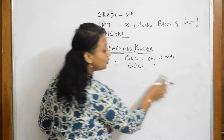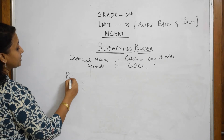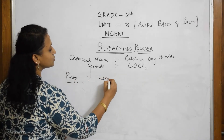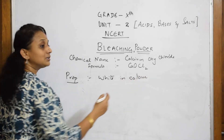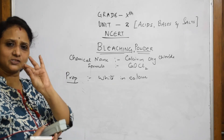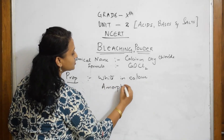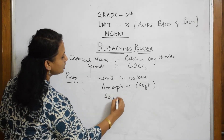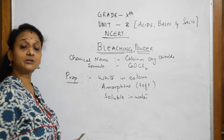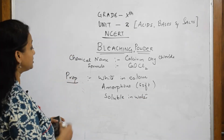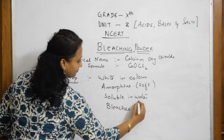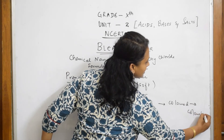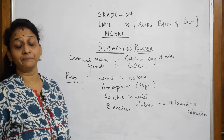Now the properties of bleaching powder. When you see bleaching powder, the color is white. It is amorphous — amorphous means soft in nature. It is soluble in water. Bleaching powder is used for bleaching clothes, which means making colored fabric become colorless.